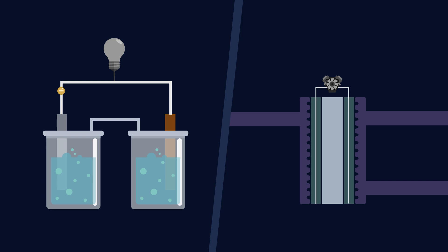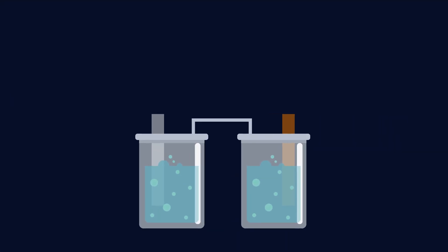Fuel cells are often seen as an alternative to conventional batteries. Both use electricity, but there are a few key differences that you need to be aware of. So first, let's take a look at a conventional battery.